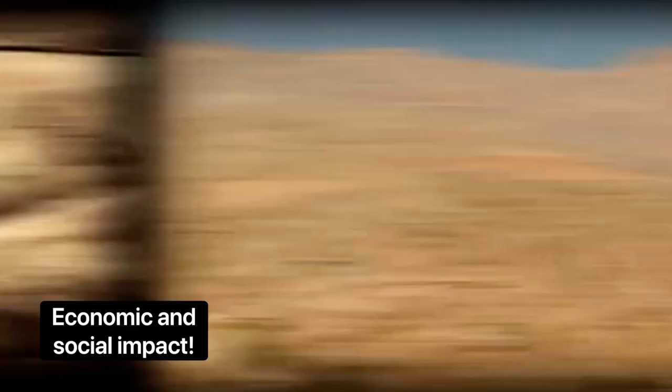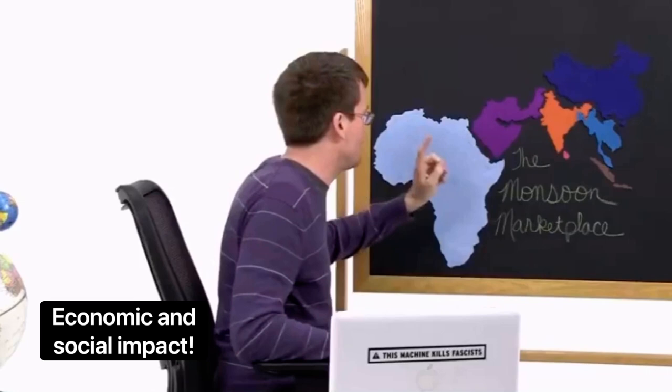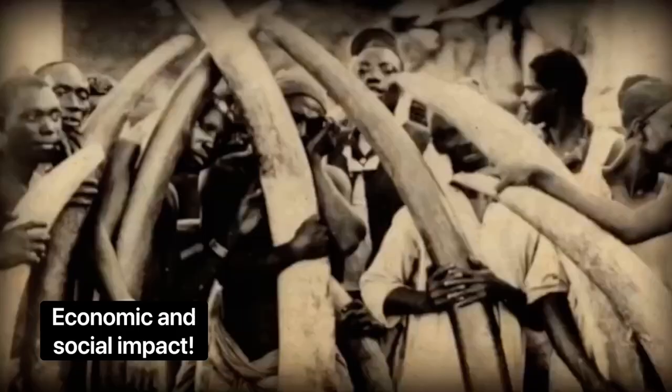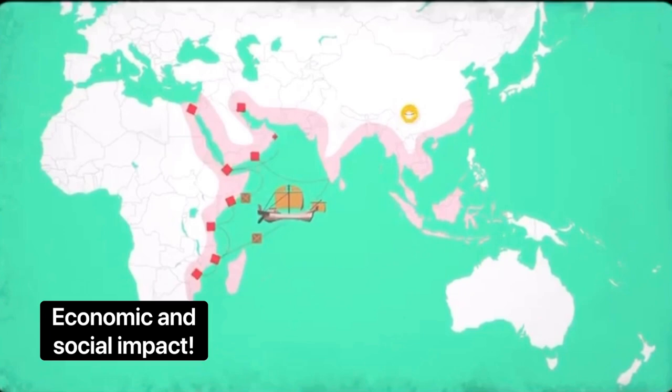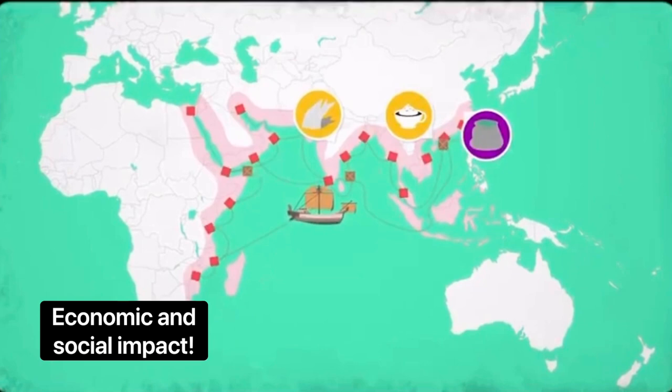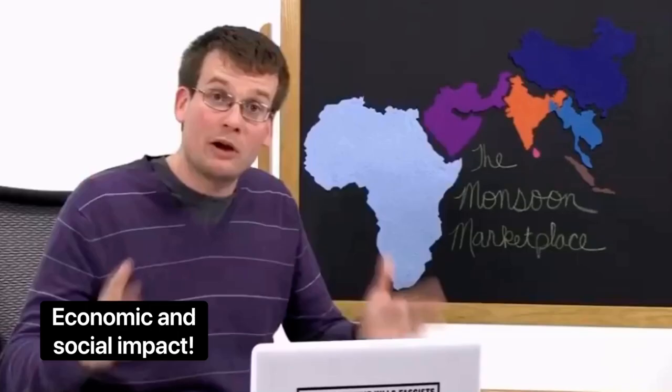However, when it becomes cheaper thanks to trade, suddenly more people can have better houses. Much of the timber that was shipped in the monsoon marketplace came from Africa, which was kind of emblematic. Africa produced a lot of the raw materials, like animal hides and skin and ivory and gold. The Swahili city-states imported finished goods such as silk and porcelain from China and cotton cloth from India. Spices and foodstuffs like rice were shipped from Southeast Asia, and especially Sri Lanka, where black pepper was a primary export.